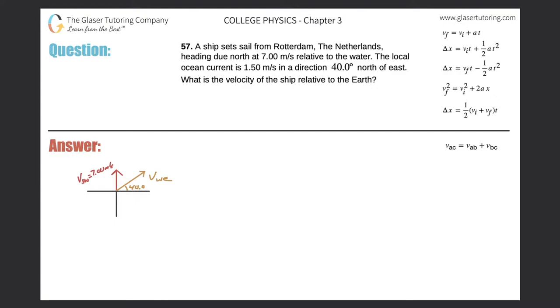Number 57. A ship sets sail from Rotterdam, the Netherlands, heading due north at 7 meters per second relative to the water. The local ocean current is 1.5 meters per second in a direction of 40 degrees north of east. What is the velocity of the ship relative to the earth?